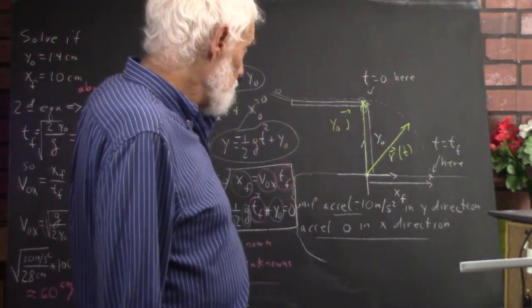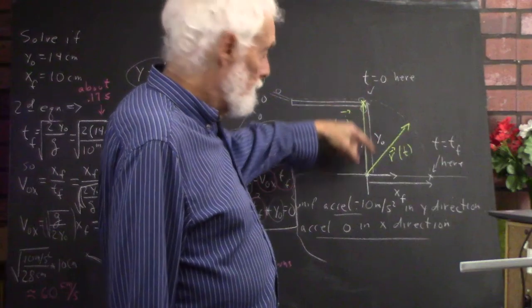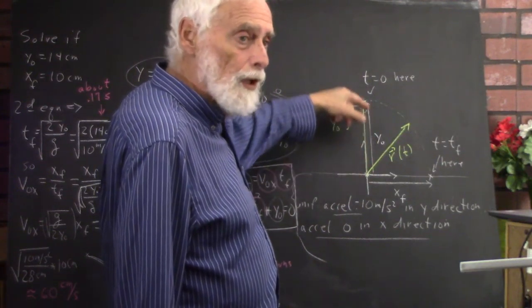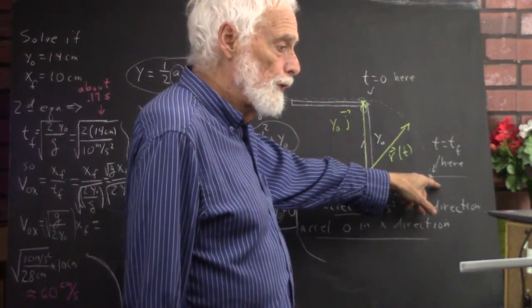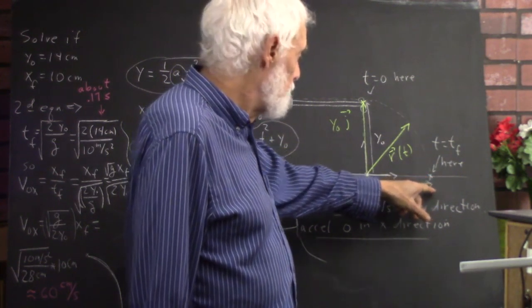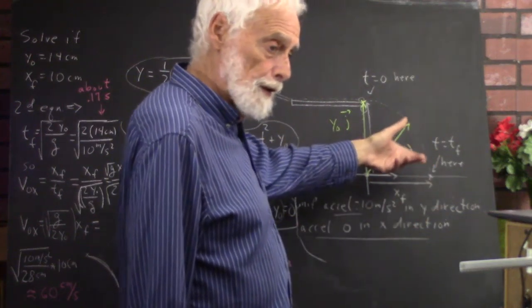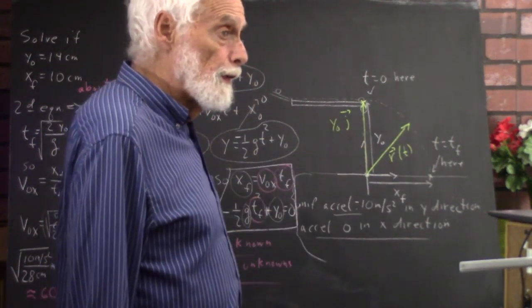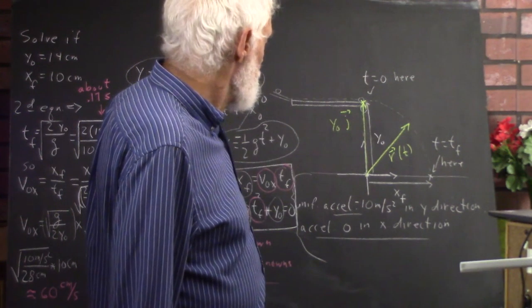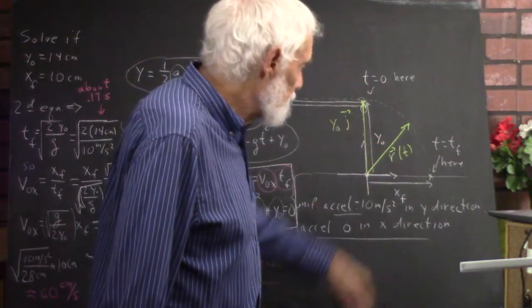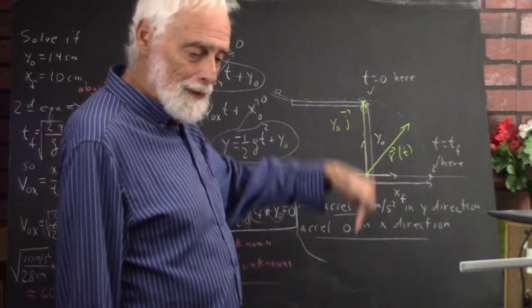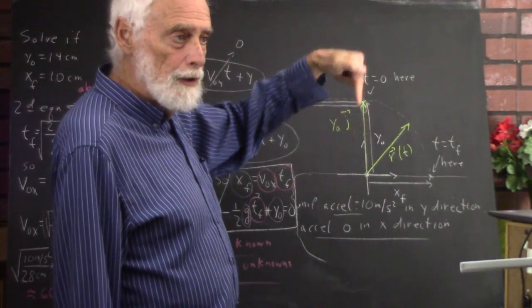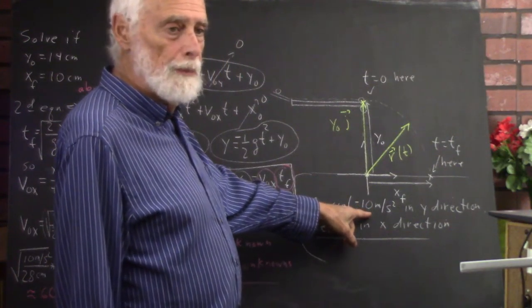What characterizes this motion? We're going to let y-naught be the height from which the ball leaves the ramp, and x-sub-f being the final position of the ball relative to its initial position. If we put the origin of our coordinate system here, then x-sub-f is just the final position along the x-axis. The motion is characterized by uniform acceleration equal to the acceleration of gravity.